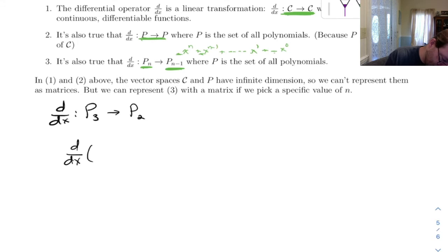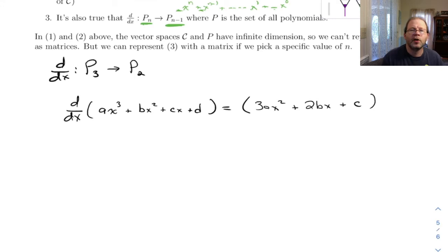What I want to do here is pull out the matrix that would work for this. A general polynomial of degree three would be something like ax³ plus bx² plus cx plus d. When you take its derivative, what you get is 3ax² plus 2bx plus c.